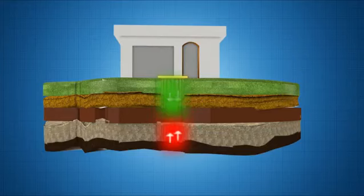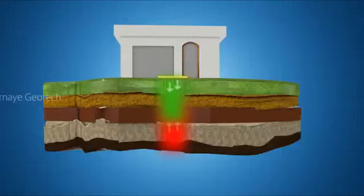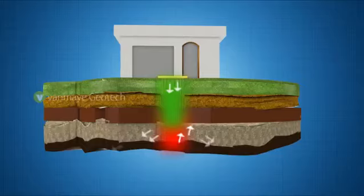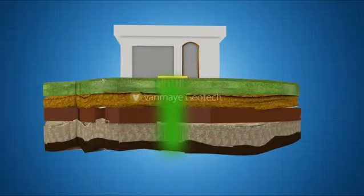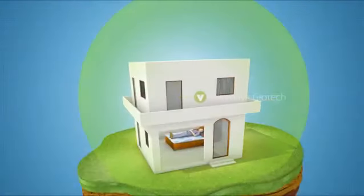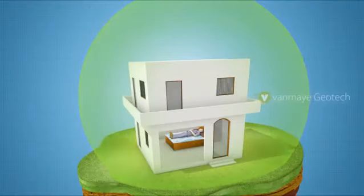After placing the rods, the positive radiations emitting from geopathic rods enter the earth's crust, suppressing the negative radiations back to their origins and protecting the entire area from harmful radiations.